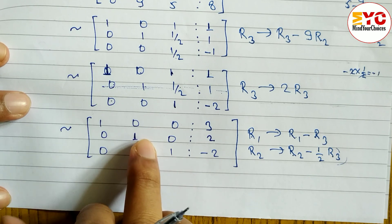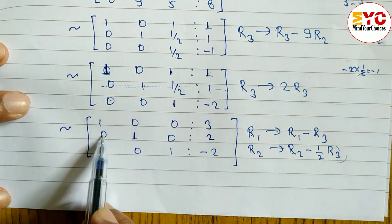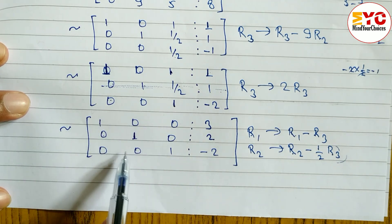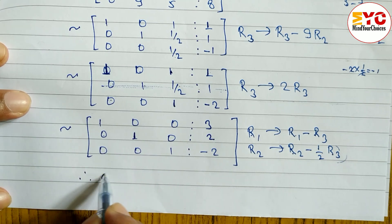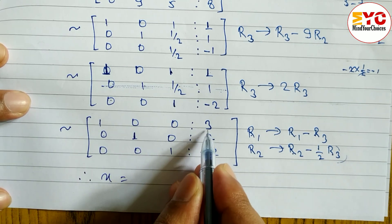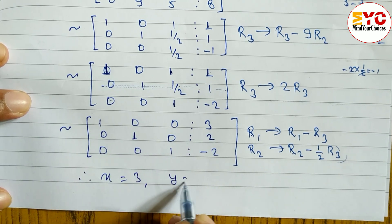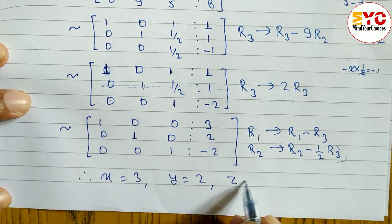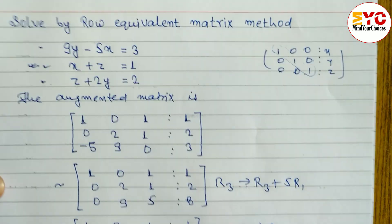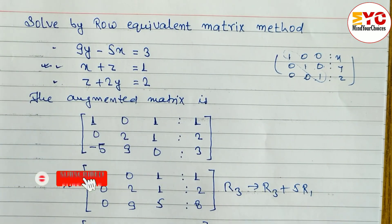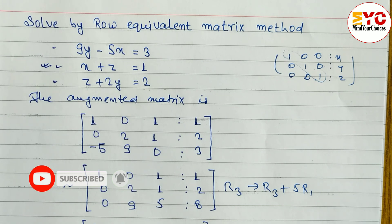The matrix is now in identity form: 1, 0, 0 / 0, 1, 0 / 0, 0, 1, with the main diagonal all 1s and all non-diagonal entries 0. Therefore, x = 3, y = 2, and z = -2. Hope you understand this video on the row equivalent matrix method. Please hit the like button and share. Thank you.